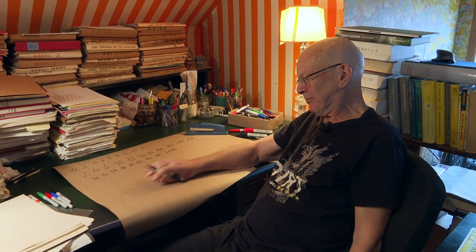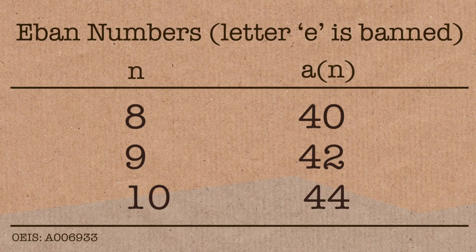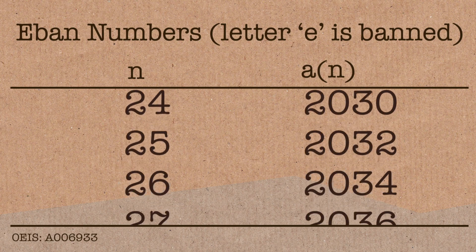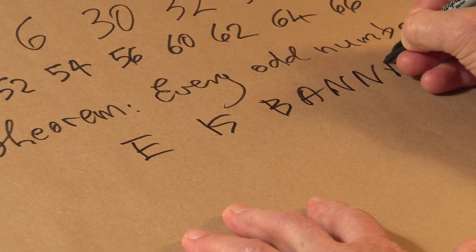What do you notice about these numbers? For one thing, they're all even. The second thing is that if you write out the number in English, there are no E's in them. One is missing because one has an E in it. Three has an E in it. Eight has an E in it. In fact, there's a theorem. It's an old theorem of mine. Every odd number contains an E. And you can easily prove that by looking at all the odd numbers and check. Why are they called even numbers? E is banned.